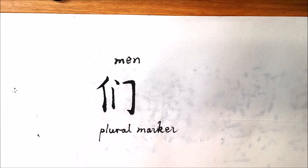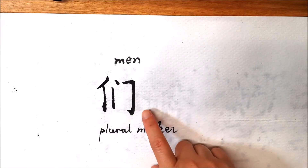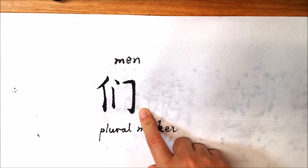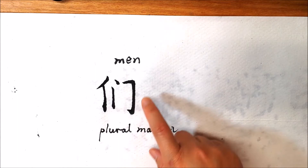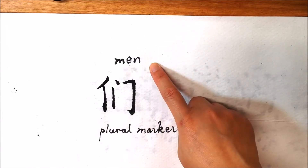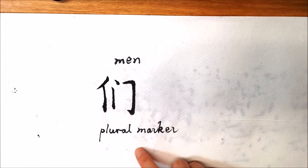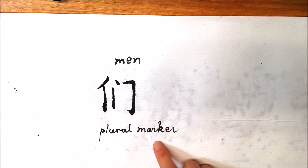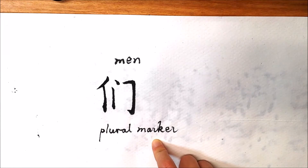Good morning. In this video, we are going to talk about this character. It sounds 'men' and it is a plural marker for pronouns and nouns referring to individuals.